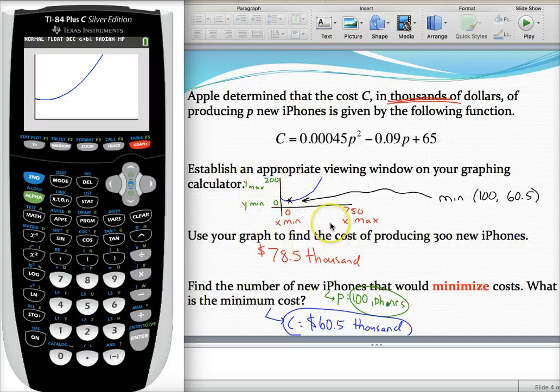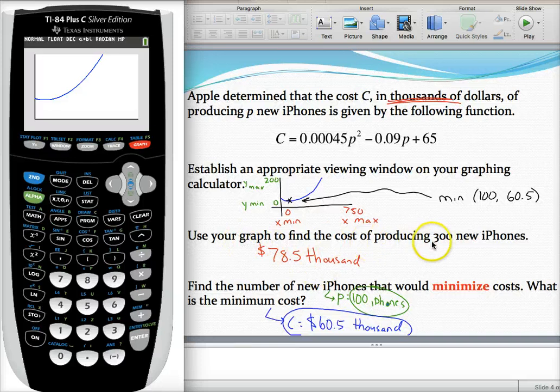I've made a sketch of it over here. Let's answer these next questions now that my graph is made. First up, they want to know the cost of producing 300 new iPhones. I can see these values don't make sense, but whatever, we'll go with it.